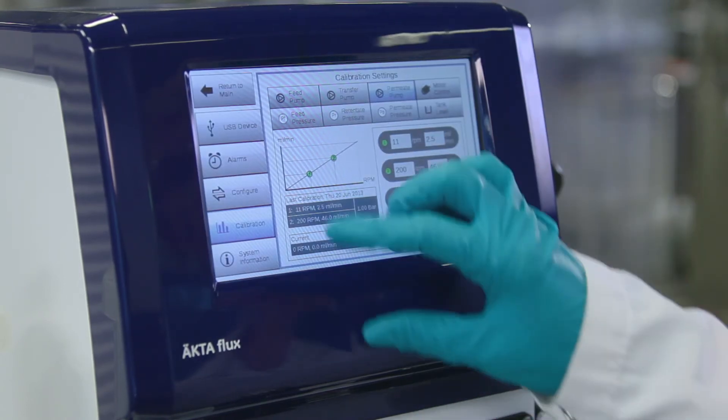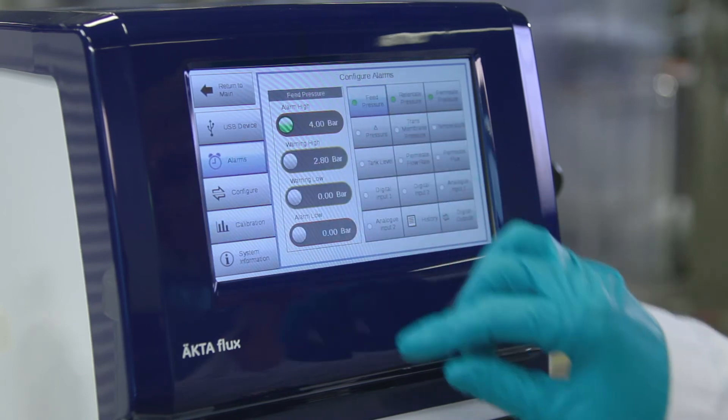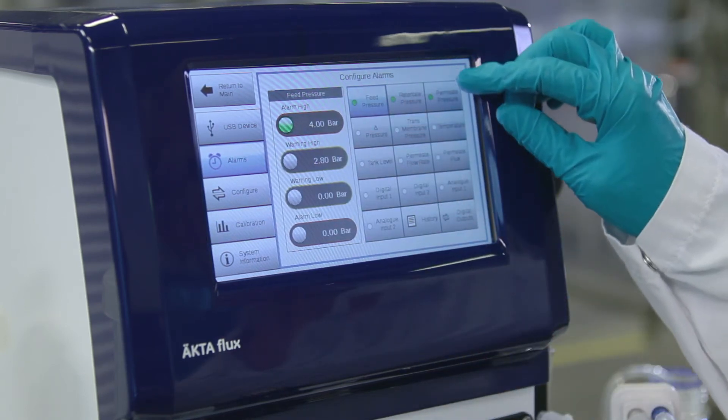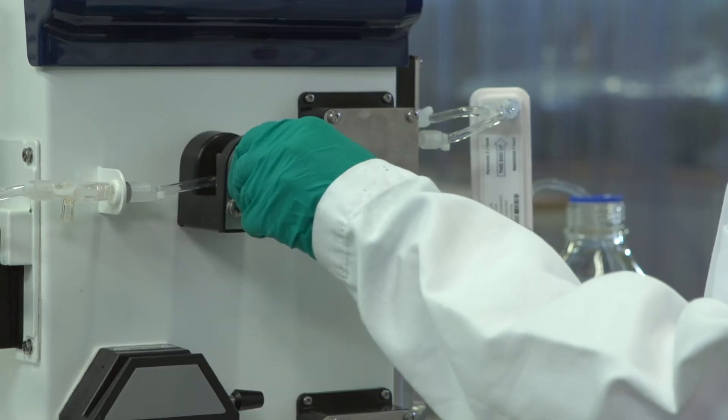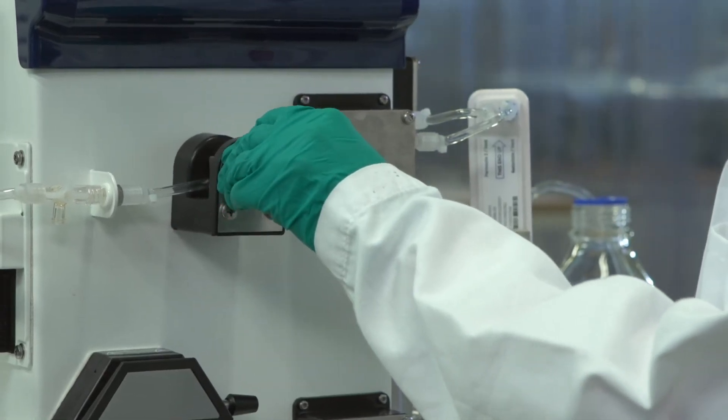Press Settings and set the endpoint alarm for low tank level to final volume. Open the permeate valve. Set transmembrane pressure using the manual retentate valve.